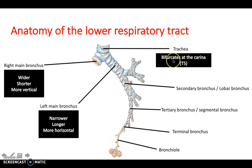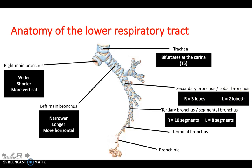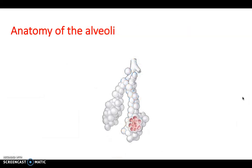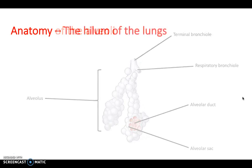The trachea bifurcates at the carina at vertebral level T5. The right lung has three lobes and ten segments, compared to the left lung with two lobes and roughly eight segments. Zooming in on the alveoli: the terminal bronchiole leads to the respiratory bronchiole, and then the alveolus as a whole — with the alveolar sac and duct at the centre.